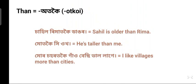Another example: I like villages more than cities. 'Mor' means my/I like, 'sohar' means city, 'gow' means village, and 'besi' means more. So the sentence means I like villages more than cities.